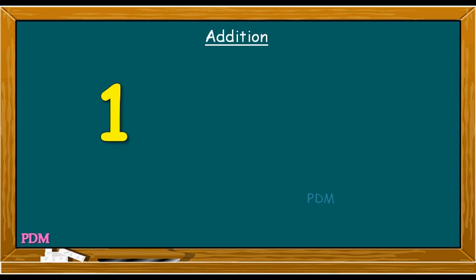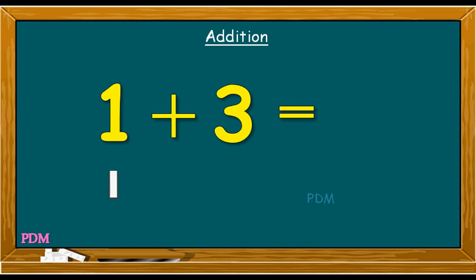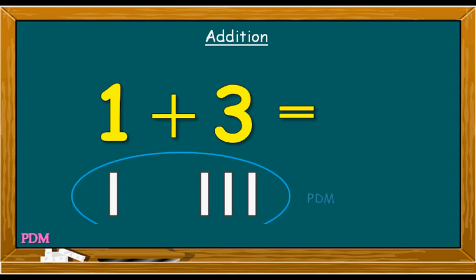One plus three. The first set of lines stands for one and the second set of lines stands for three. When we add them both together, the sum comes one, two, three, four. One plus three is equal to four.